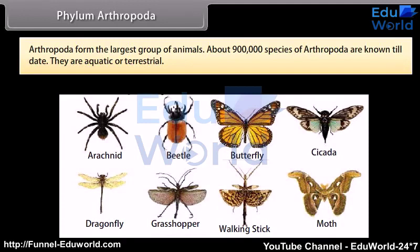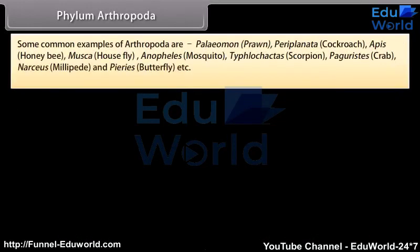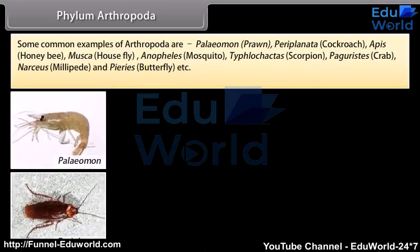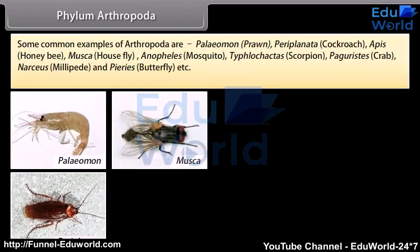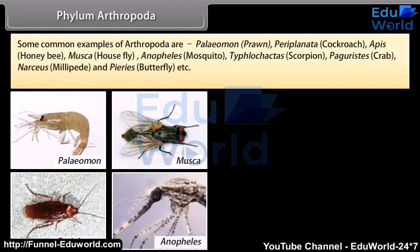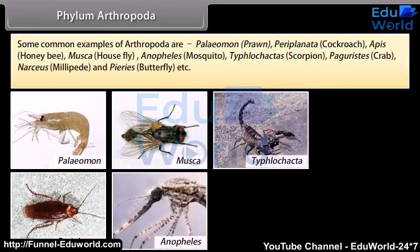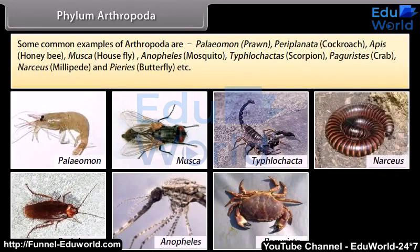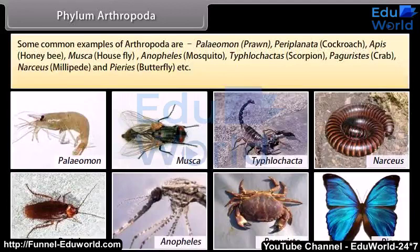Some common examples of Arthropoda are Paleomon (Prawn), Periplaneta (Cockroach), Apis (Honeybee), Musca (Housefly), Anopheles (Mosquito), Tityus (Scorpion), Pagurus (Crab), Narceus (Millipede), and Pieris (Butterfly), etc.